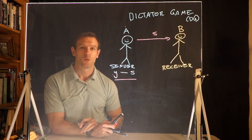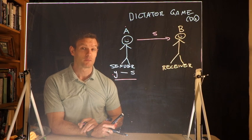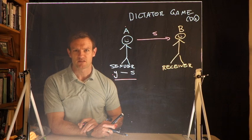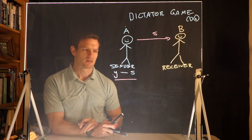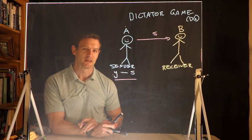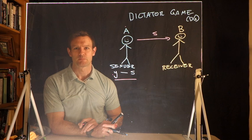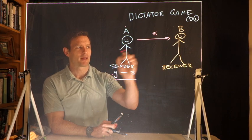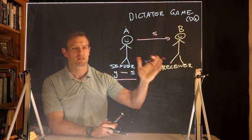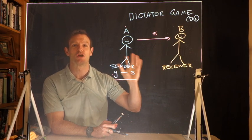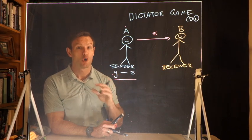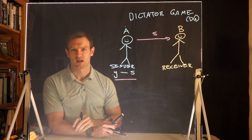In other circumstances where A has to earn the money before giving it to B, the amount that A gives to B is typically much lower, somewhere in the region of anywhere from zero to 10 or 15%. Some people do still give. So what we see is that some people are willing to behave in a non-self-interested way with money that they either receive in a windfall way from the experimenter or that they themselves earn from doing a specific task in the laboratory.